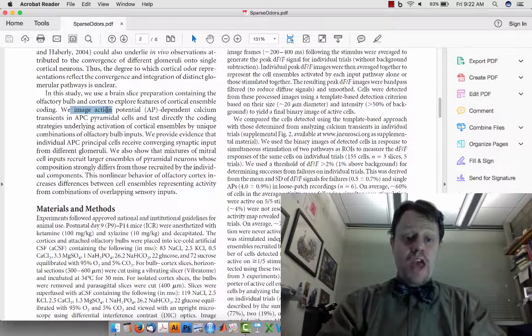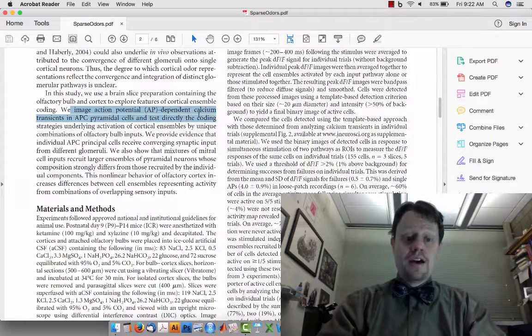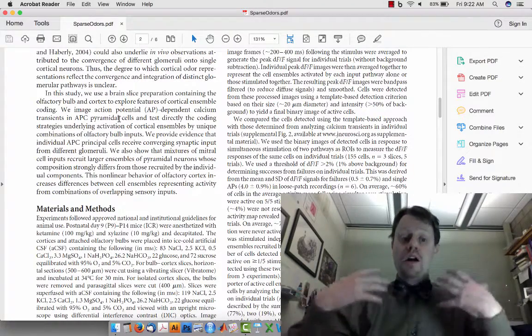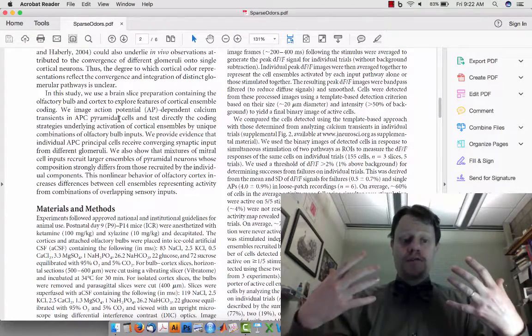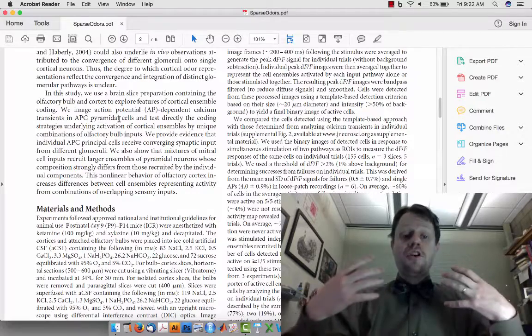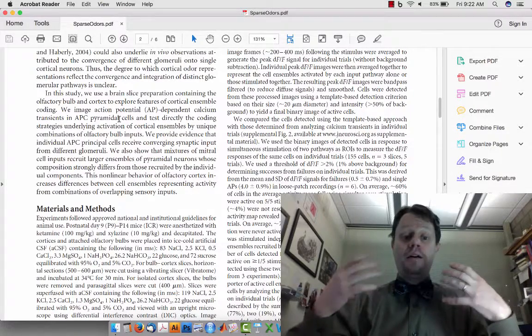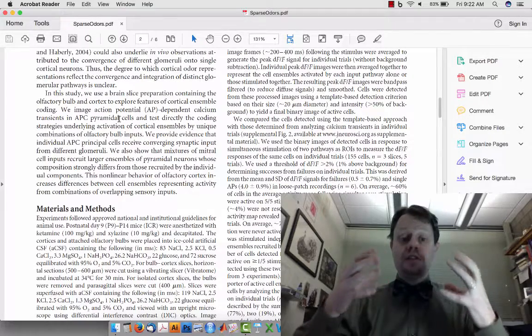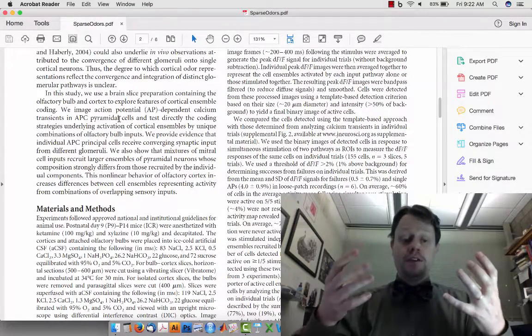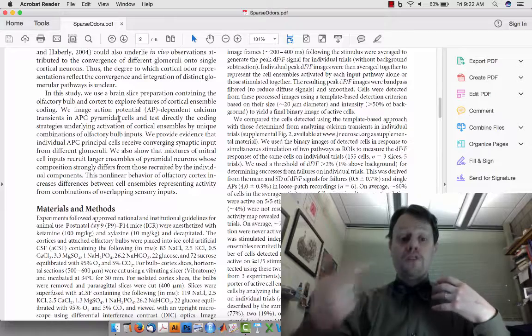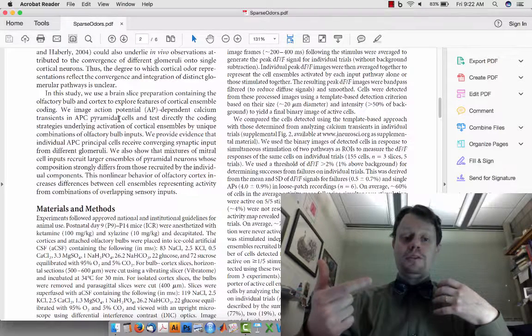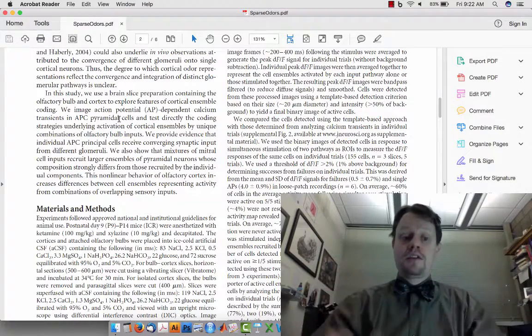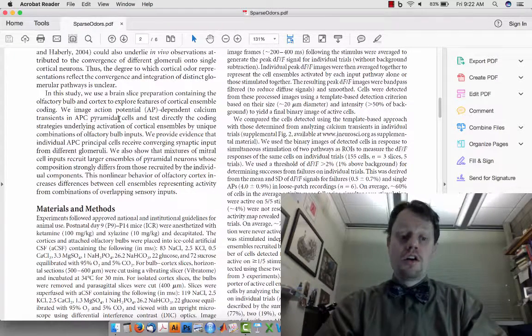They image action potentials using calcium signals. When a cell fires an action potential a lot of channels open, including some voltage activated calcium channels. If they have a chemical inside the cell that changes color when calcium is present, then they can infer an action potential by noticing when those cells change color because the voltage activated calcium channels in the cell are open.